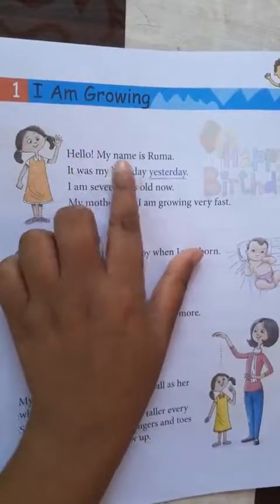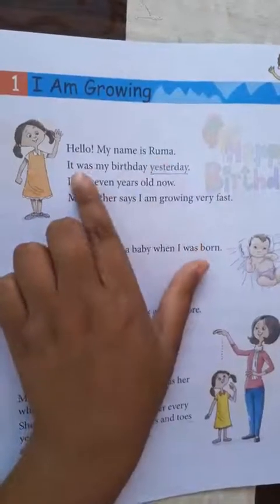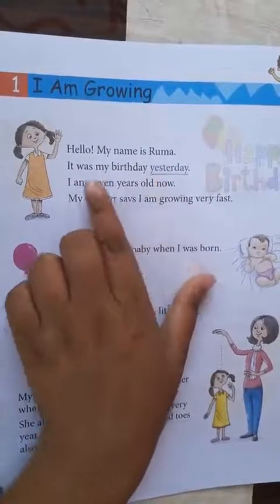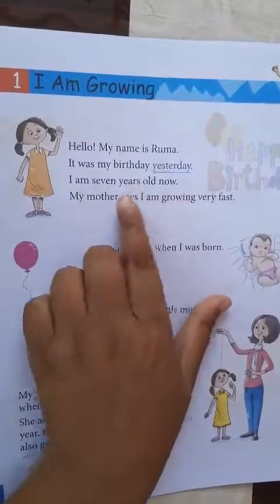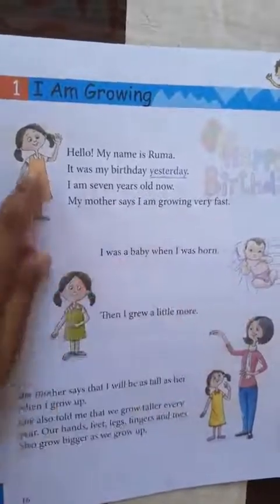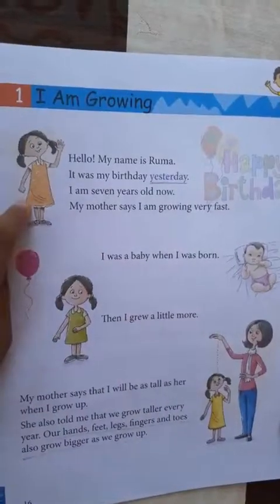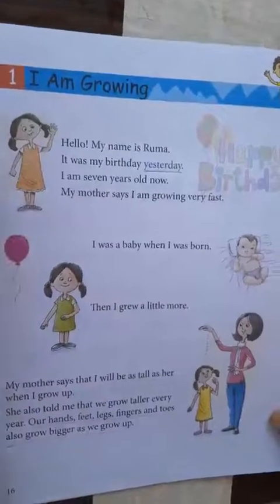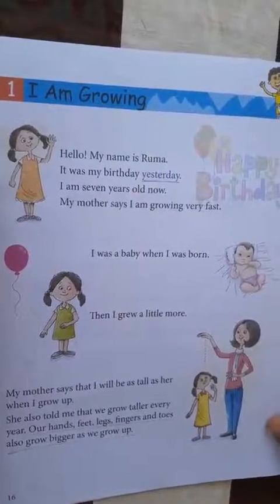Hello, my name is Ruma. It was my birthday yesterday. I am 7 years old now and my mother says I am growing very fast. So students, here a little girl named Ruma is introduced — her birthday was yesterday.